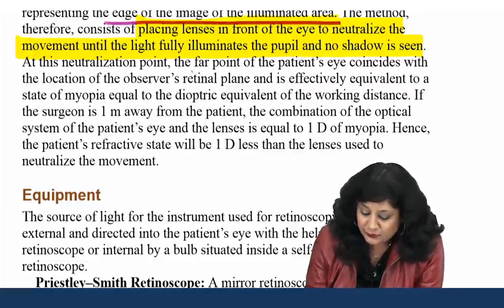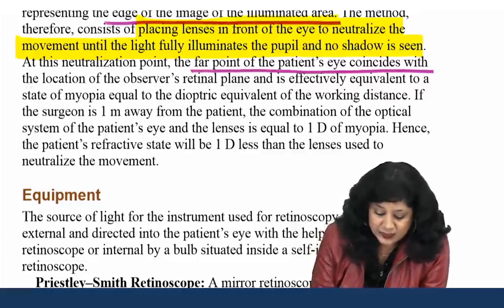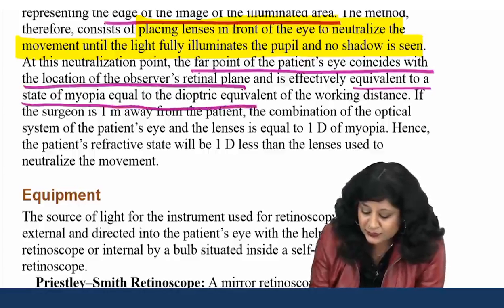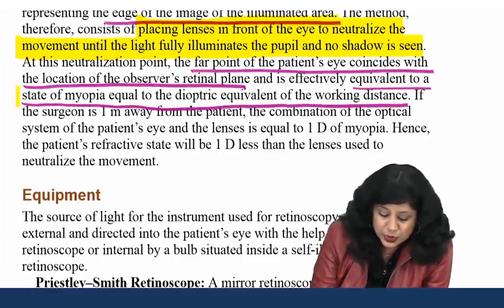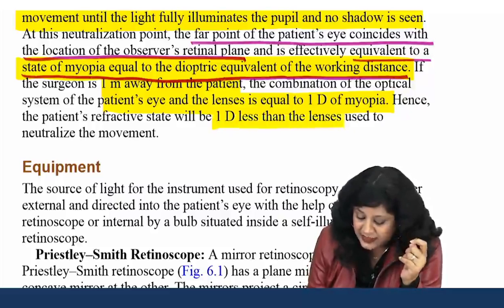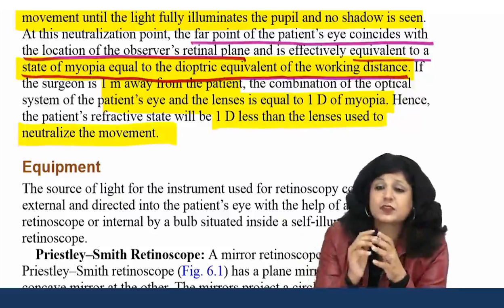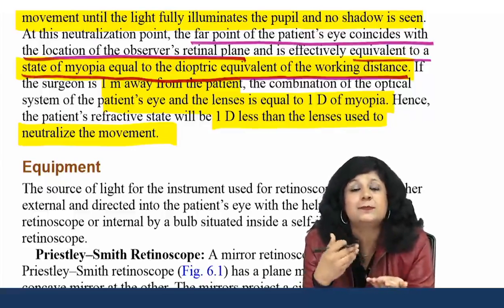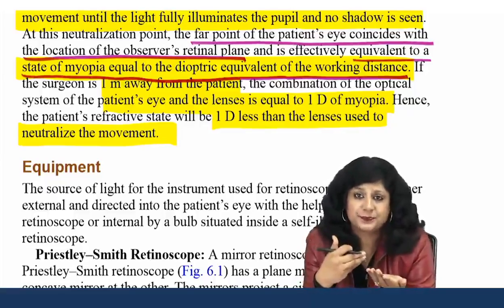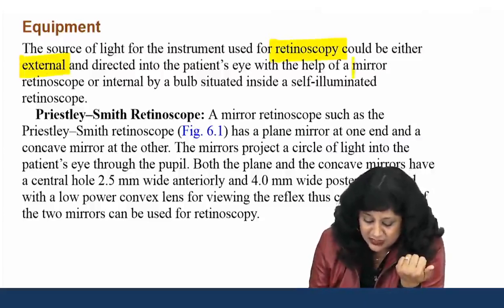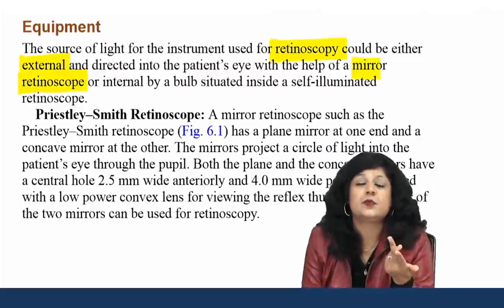The image will be in front of the retina in cases of myopia, on the retina in emmetropia, and behind the retina in cases of hypermetropia. This is estimated by moving the illuminated spot or slit — because the retinoscope we use is either a spot retinoscope or a slit retinoscope — across the fundus and observing the behavior of the reflex in the patient's pupillary area.